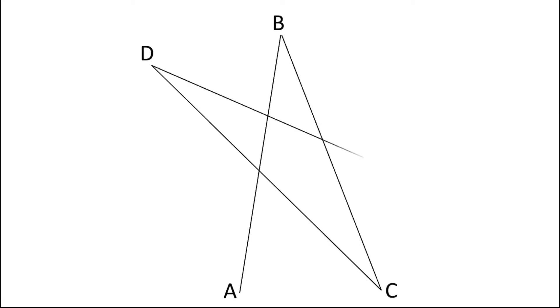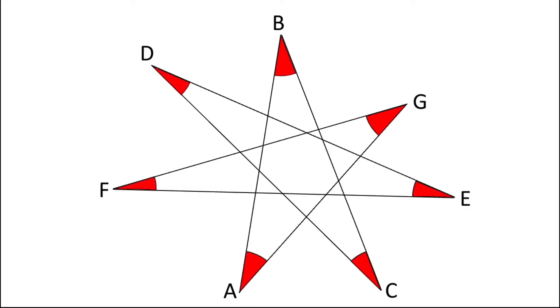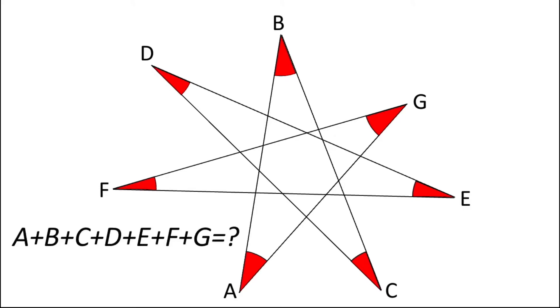Today we will see a problem of a 7-pointed star. In this problem, we have a structure like this — a 7-pointed star — and we need to find the sum of all the corner angles. That means angle a plus b plus c plus d plus e plus f plus g. So before watching the solution, you can try this problem, just give it a try.